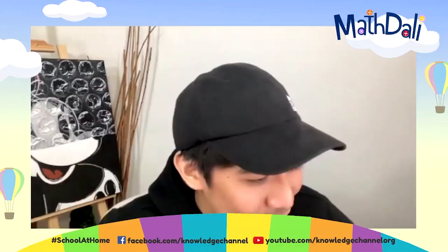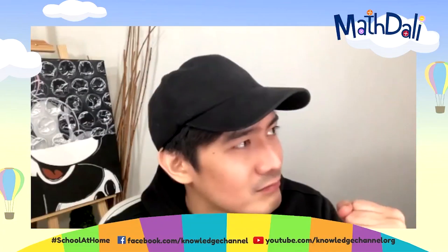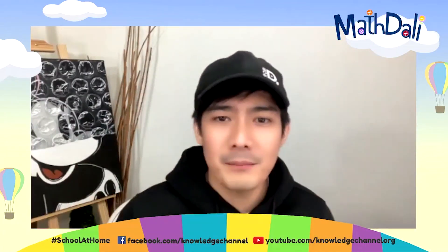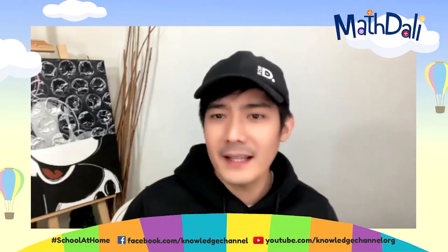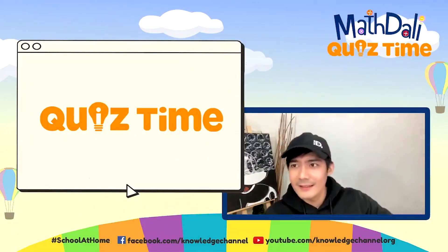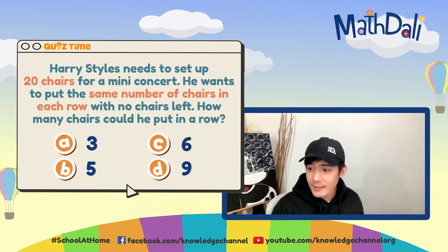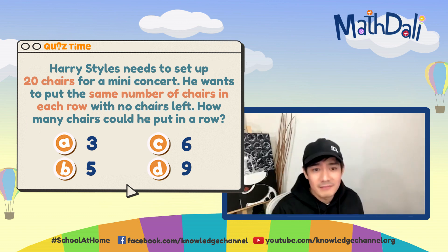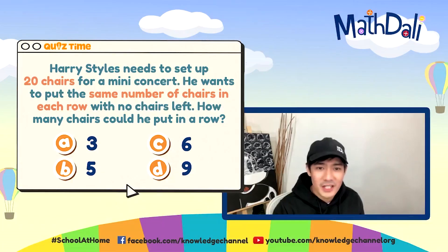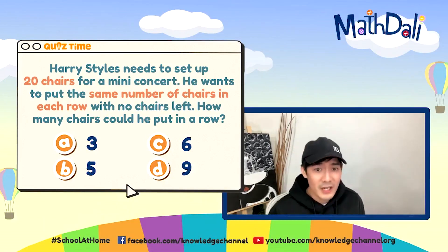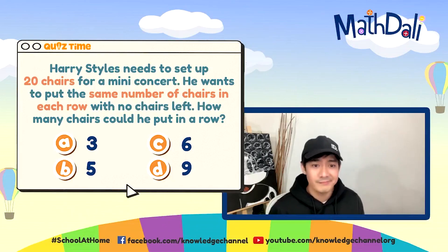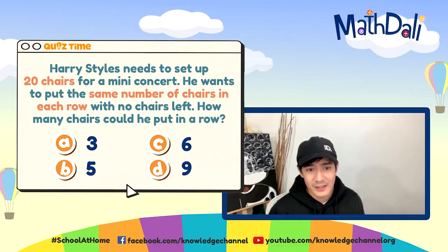At this point, let's see kung gaano niyo nakuha yung ating word problems — it's time for the Math quiz! Harry Styles needs to set up 20 chairs for a mini concert. He wants to put the same number of chairs in each row with no chairs left over. How many chairs could he put in a row? Is it A: 3, B: 5, C: 6, or D: 9? 20 seconds — go!